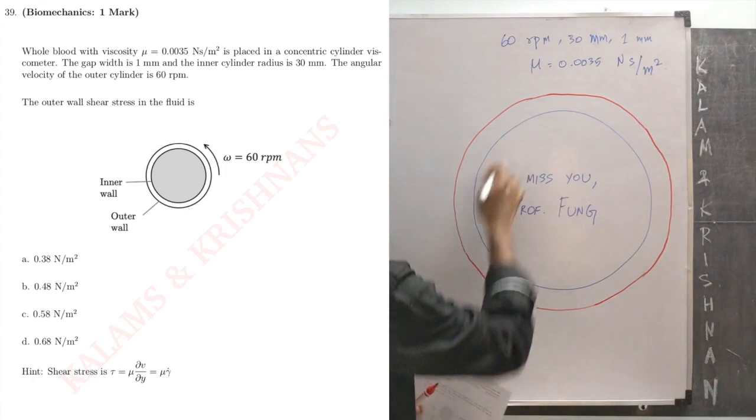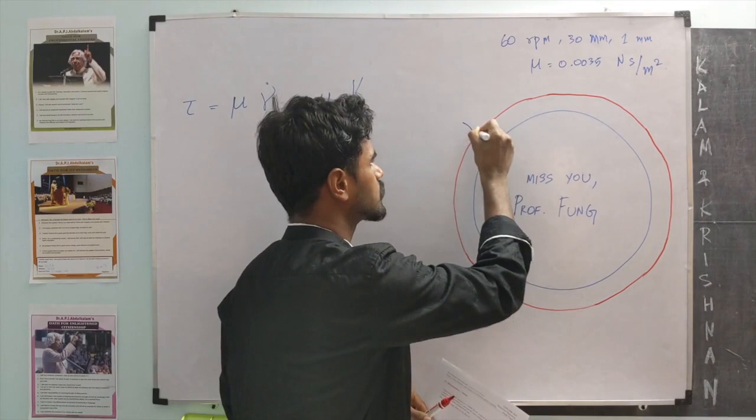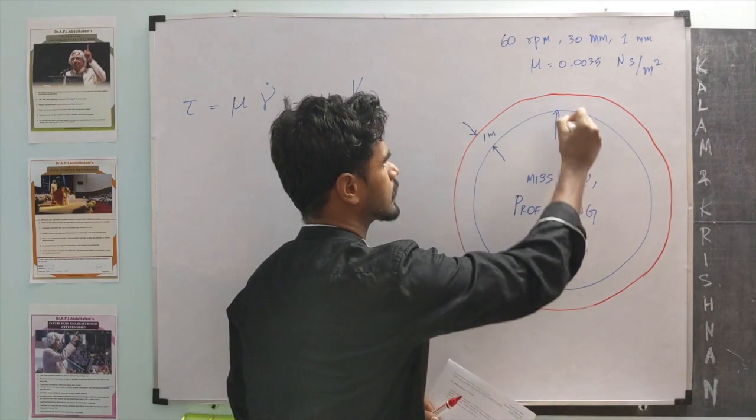So, this is a fixed cylinder. This is an outer cylinder that moves. The gap between these two cylinders is 1 mm, and the radius of this inner cylinder is 30 mm.